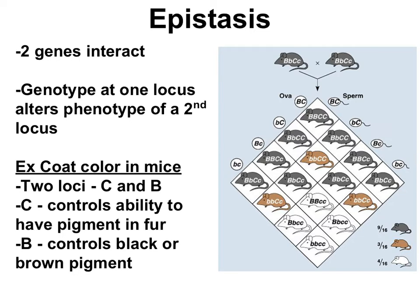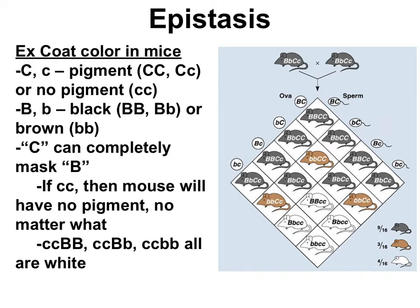Next on our list is epistasis. Epistasis is when the genotype of one locus affects how another locus is expressed. In mouse fur, the C locus controls the ability to have pigment — having pigment is completely dominant to not having pigment. If the mouse fur can have pigment, then the B locus determines the color: black is completely dominant to brown. But if the C locus is homozygous recessive (little c, little c), the mouse will be white no matter what is going on at the B locus.